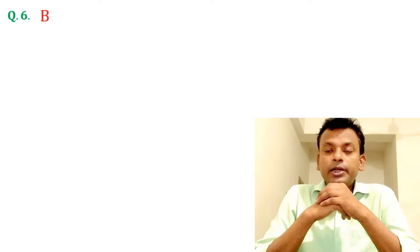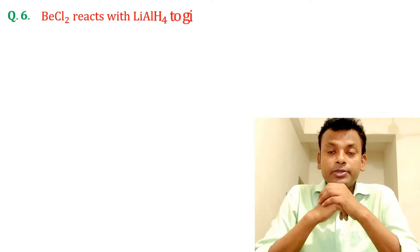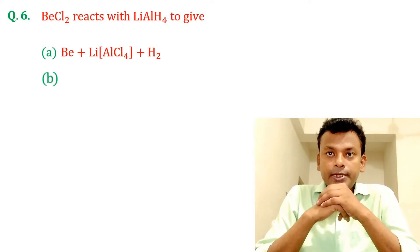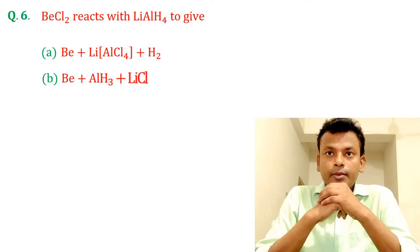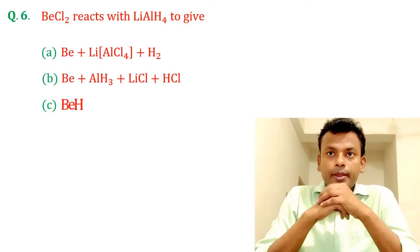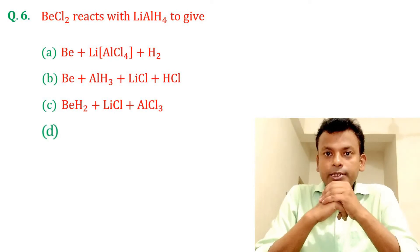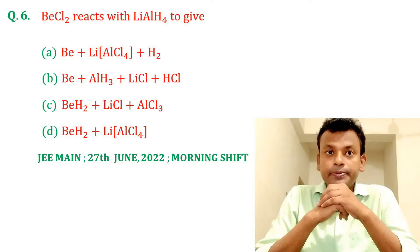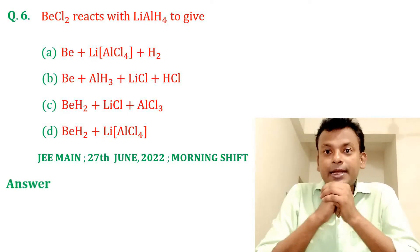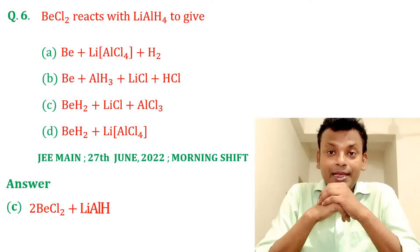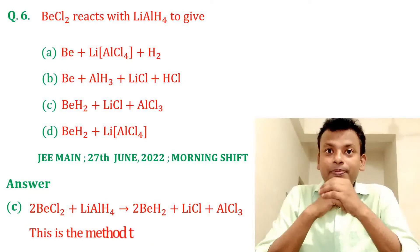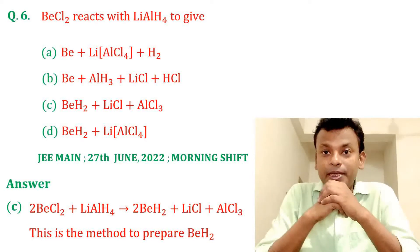Question number 6: BeCl2 reacts with LiAlH4 to give which product? This question was set in JEMN 27th June 2022 Morning Shift. Answer: Option C is the correct answer. The reaction is: 2 BeCl2 + LiAlH4 → 2 BeH2 + LiCl + AlCl3. This is the method to prepare BeH2.